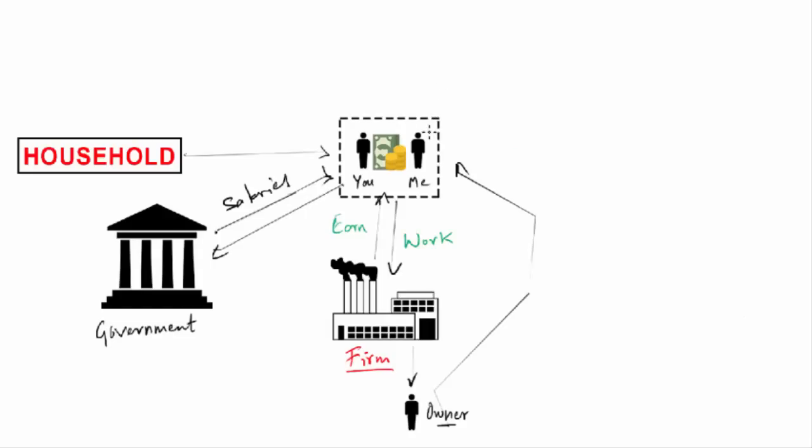Hence, the household earns money as wage, they spend, then they save, and then they pay taxes. So one part goes to the government, the other part goes to the firm for buying their products, and the remaining is saved. Hence, we can also say the market and firms could not exist without the demand coming from the household.